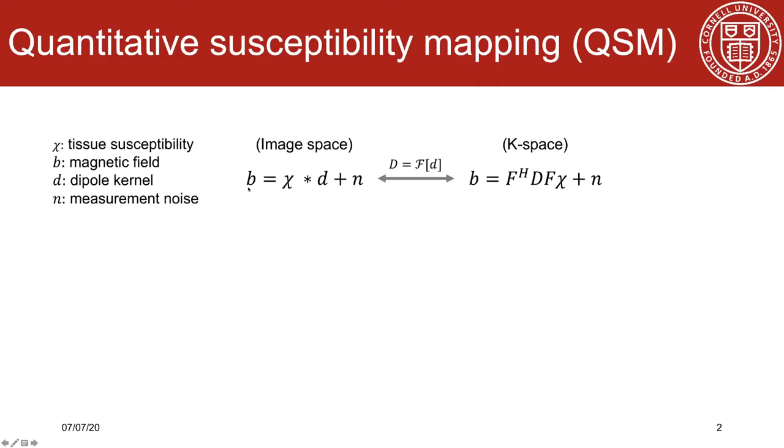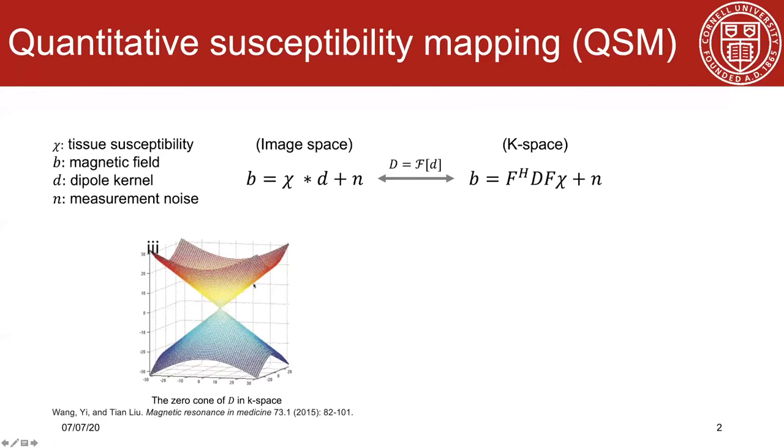We can estimate the magnetic field from multi-echo gradient-echo phase data with high precision, but the problem is how to recover susceptibility chi from b based on this imaging model. This is because the dipole inversion is intrinsically ill-posed.